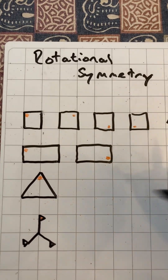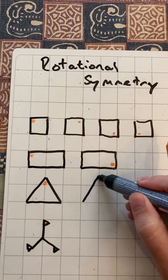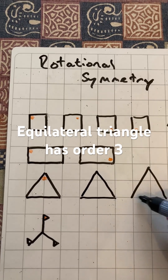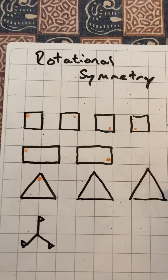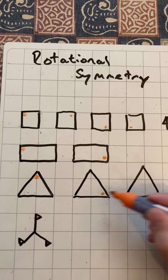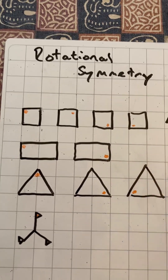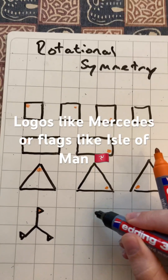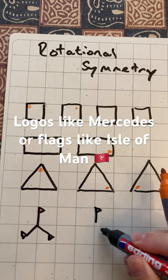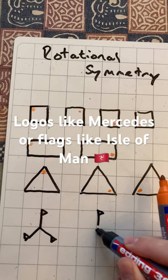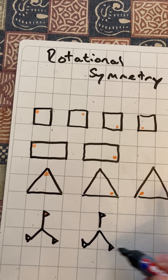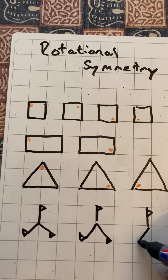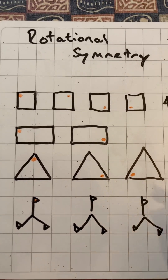Equilateral triangle — I can spin three times because it's got three corners and three lines of symmetry. Those dots would move there. And you'll see something like this with a flag, like the Mercedes logo or the Isle of Man flag, where it'll have order three.